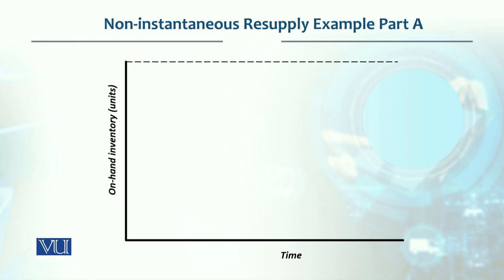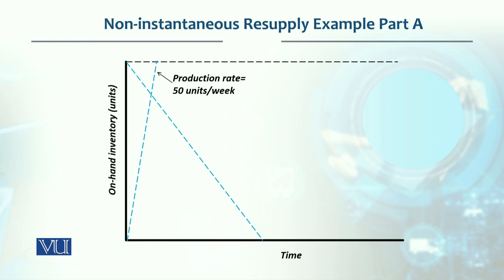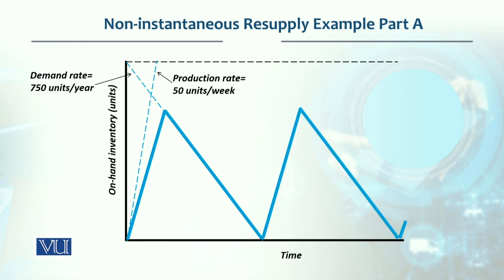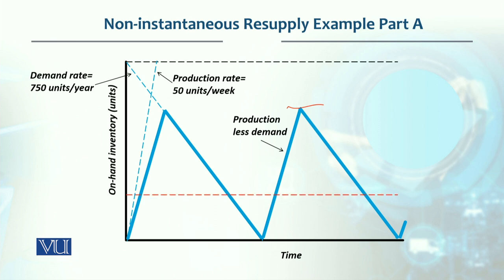Graphically, this is the quantity axis. The demand rate is approximately 14.42 units per week and the production rate is 50 units per week. This shows the buildup of inventory — production less demand — and this is our maximum inventory which will be built up. The lead time is 1.5 weeks.